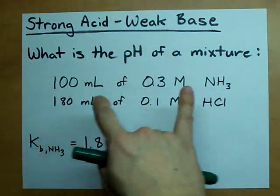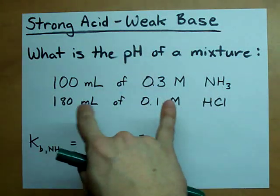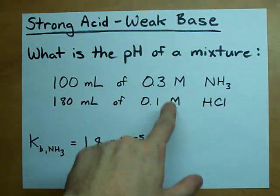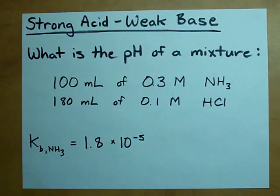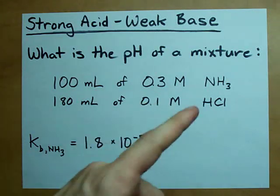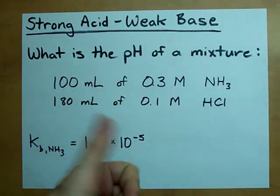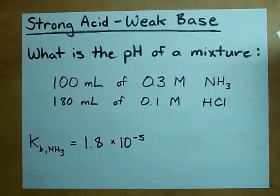Find the pH of a mixture of ammonia and hydrochloric acid where we're going to have some ammonia left. I'm just going to do it and show you how to do it. If you want an explanation, find my longer 10-minute video.